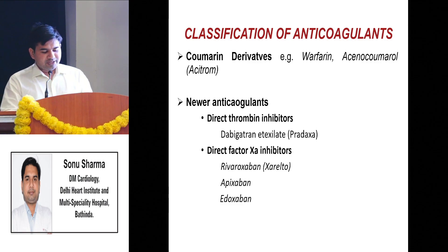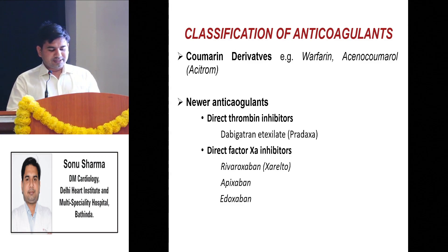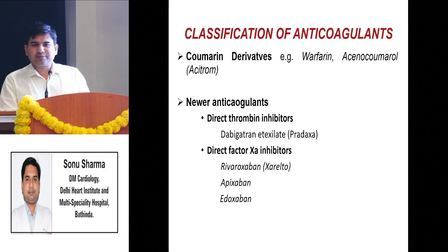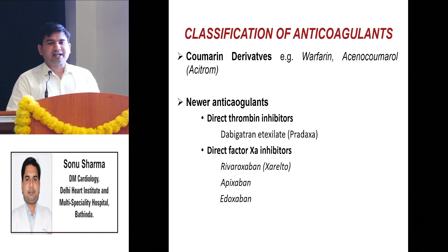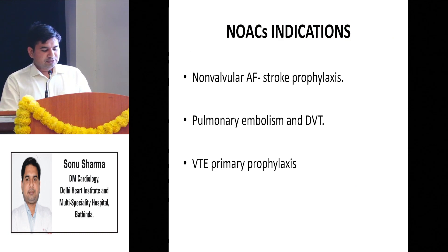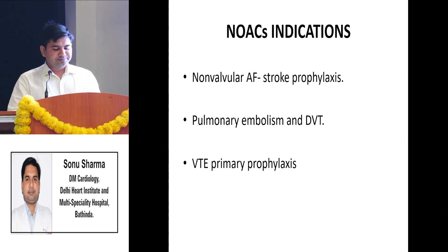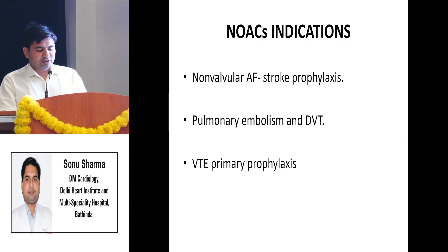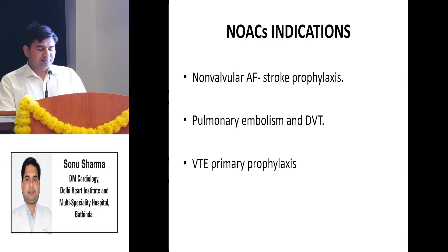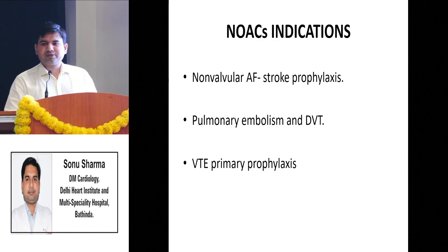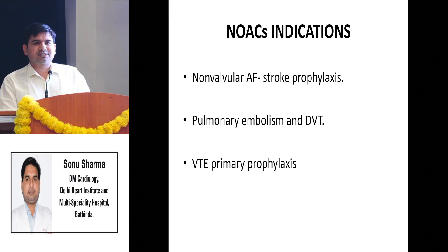Beyond warfarin, we now have many anticoagulants: direct thrombin inhibitors like dabigatran, and direct Xa inhibitors like rivaroxaban, apixaban, and edoxaban. These are known as NOACs. The main indications for NOACs are: non-valvular atrial fibrillation for stroke prophylaxis, treatment of pulmonary embolism, DVT, and prevention of venous thromboembolism in post-surgical cases.